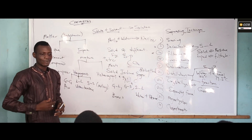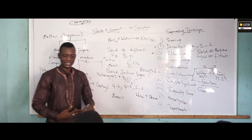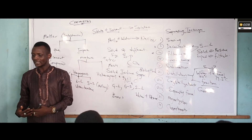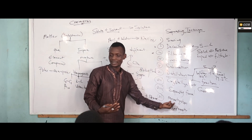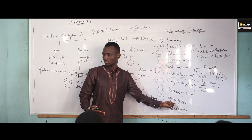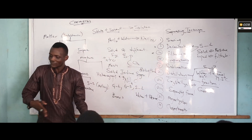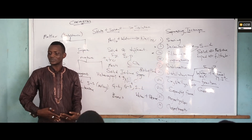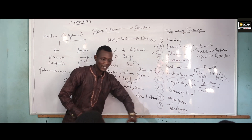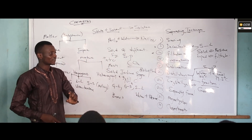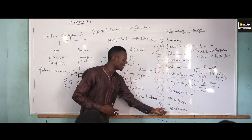The next one is magnetization. When we are having a magnetic substance mixed with impurities which are non-magnetic substances, you can use magnetization to remove the magnetic substance from the non-magnetic substance.